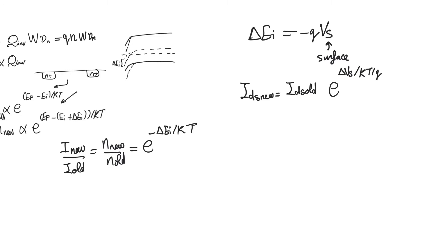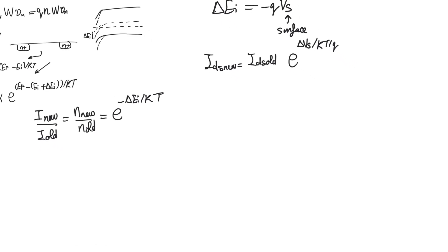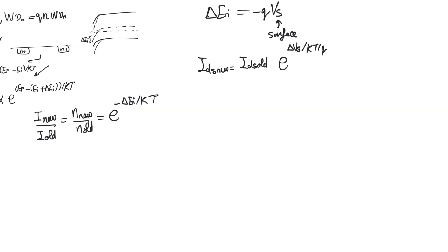This is still not very useful because it's a multiplicative relationship without a clear reference point, and delta V_S — the extra surface potential at the surface of the substrate — is not externally measurable at the circuit level. So we still have to develop this model a little bit further.